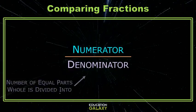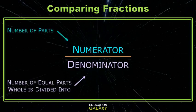The denominator tells us the number of equal parts our whole is divided into, and the numerator is the number of those parts we're identifying.